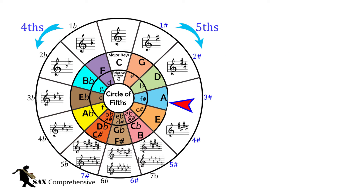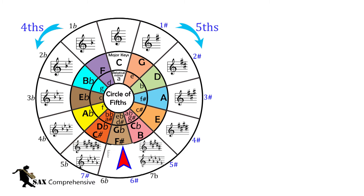We can continue in this fashion around the circle until we reach C sharp major and its relative minor, A sharp minor. Each time we move around the circle clockwise, the key changes by a fifth, and each time from C to C sharp major, it changes by adding another sharp to the scale.